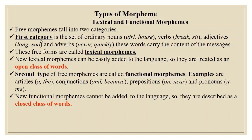The first category is the set of ordinary nouns — for example, 'girl', 'house' — verbs like 'break', 'sit', adjectives like 'long', 'sad', and adverbs like 'never', 'quickly'. These words carry the content of the message, so they are called lexical morphemes. New lexical morphemes can be easily added to the language, so they are treated as an open class of words.